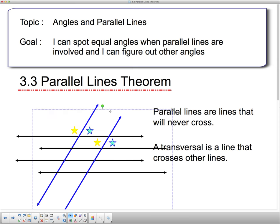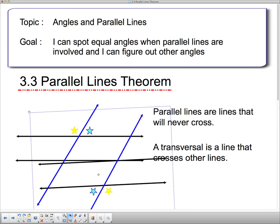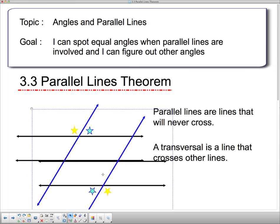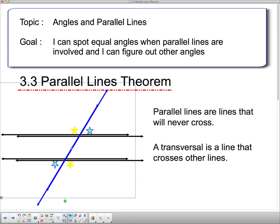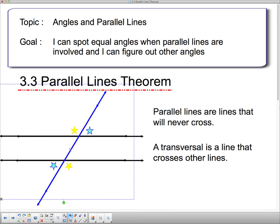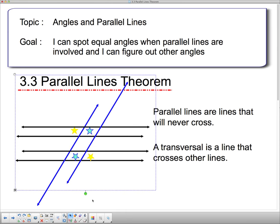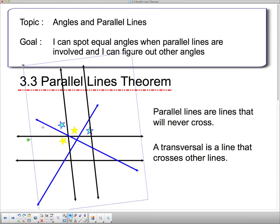I can also flip this thing around like that. And I've got other angles that are equal down in here. And remember that yellow star was the same over here. And then this is equal over here. So there's lots of equal lines all over the place when you have a transversal cutting a parallel line.